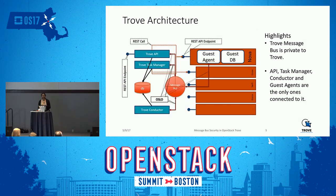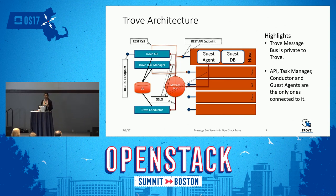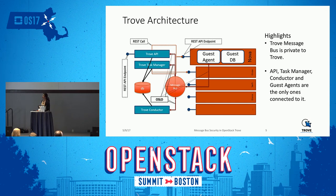In this slide, we talk about the Trove architecture in a bit more detail. Trove consists of mainly four components: the Trove API, the Trove Task Manager, the Controller, and the Guest Agent. The three services — API, Task Manager, and Conductor — run on the control plane, whereas the Guest Agent, along with the database server, runs on the compute node which Nova provisions. All these different Trove services share the same message bus and a database, separate from what the rest of the OpenStack services use.